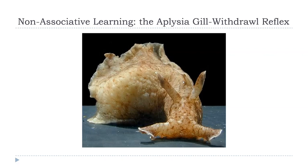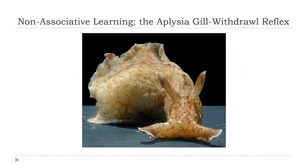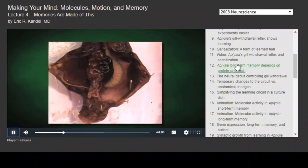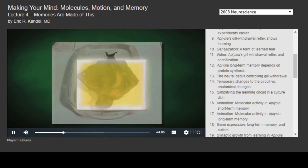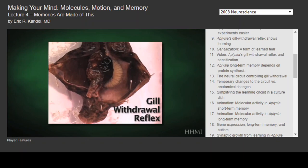The large flap of skin over the top of the back is called the mantle. You can push aside the mantle to expose structures like the siphon, which the animal uses to draw water into the mantle cavity where the gill is located. Aplysia have a very simple gill withdrawal reflex — any physical contact with the siphon produces a reflex where the gill retracts inward. We'll look at a video showing a weak stimulus applied to the siphon so we can see the amplification with sensitization.